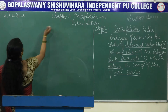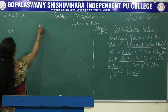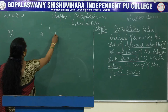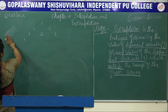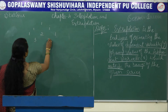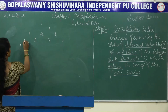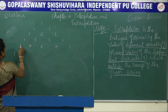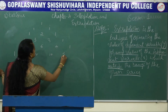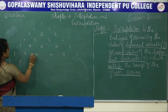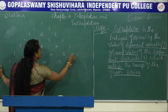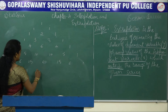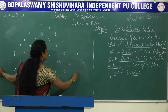Starting with n=0, the Pascal triangle row is just 1. For n=1: 1, 1. For n=2: 1, 2, 1. For n=3: 1, 3, 3, 1. For n=4: 1, 4, 6, 4, 1. For n=5: 1, 5, 10, 10, 5, 1. For n=6: 1, 6, 15, 20, 15, 6, 1. For n=7: 1, 7, 21, 35, 35, 21, 7, 1. Each number is the sum of the two numbers directly above it.